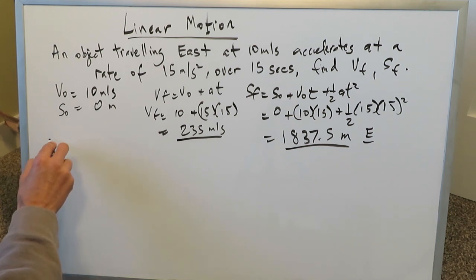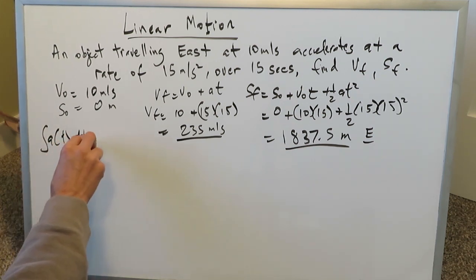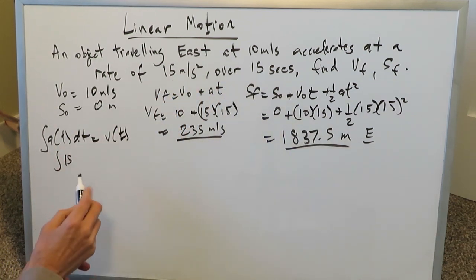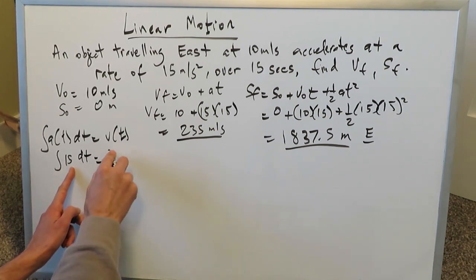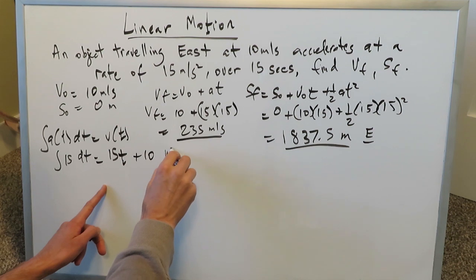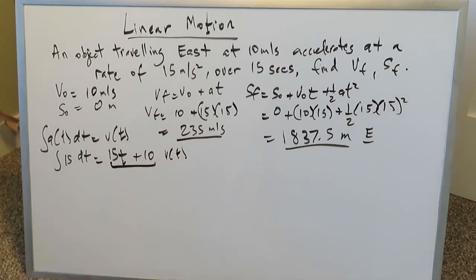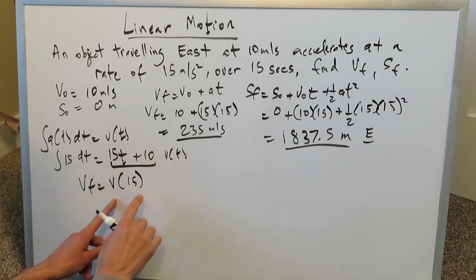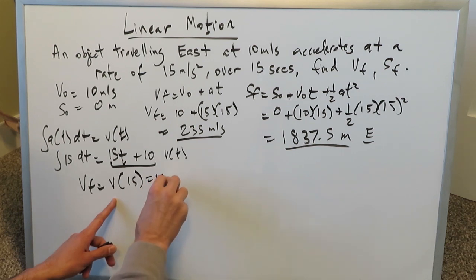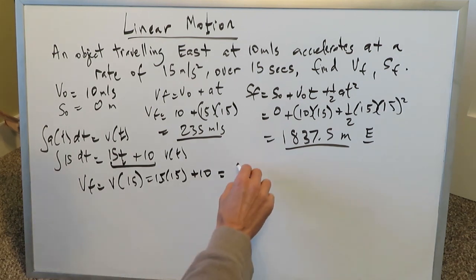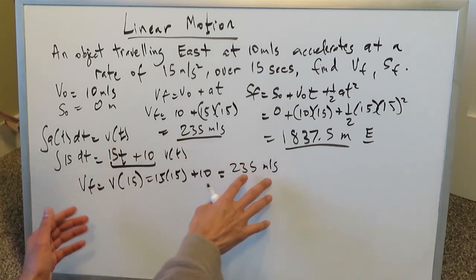Now the calculus way. Starting with the acceleration function of 15, we take the integral of 15 dt to get 15t, and we add the original velocity of 10, giving a velocity function of 15t plus 10. To find the final velocity at t=15 seconds: velocity at 15 equals 15 times 15 plus 10, which is 235 meters per second — matching our algebra result.